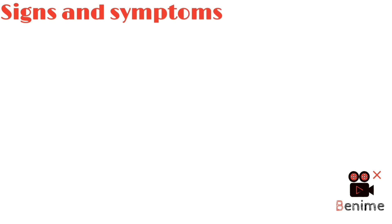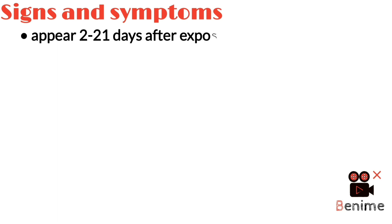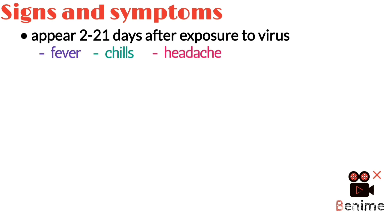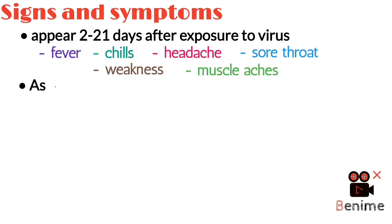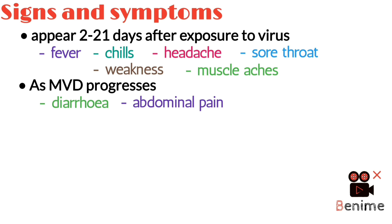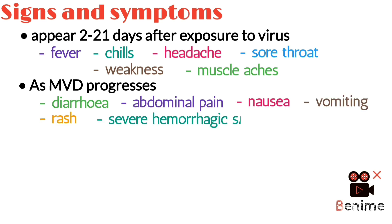The signs and symptoms of Marburg virus infection typically appear 2 to 21 days after exposure to the virus. Early signs and symptoms of MVD typically consist of fever, chills, headache, sore throat, weakness, and muscle aches. As MVD progresses, diarrhea, abdominal pain, nausea, vomiting, rash, and severe hemorrhagic signs and symptoms may also occur.